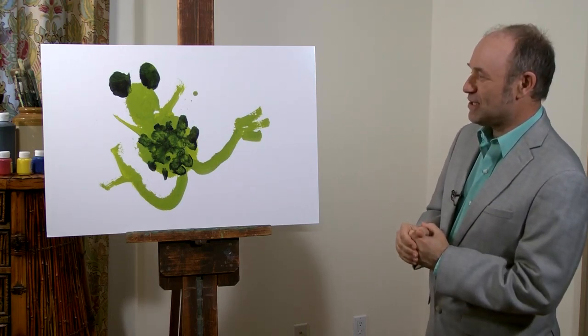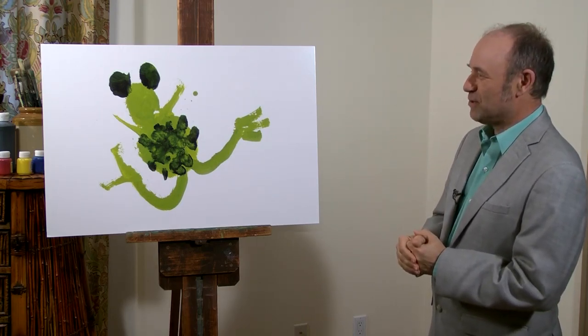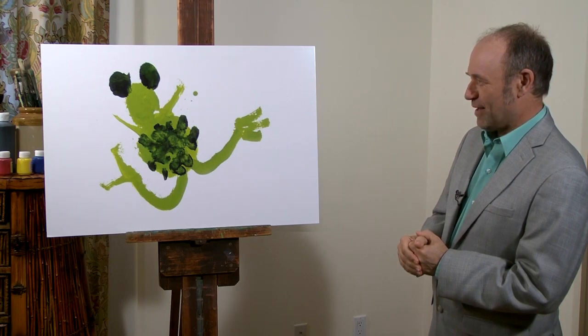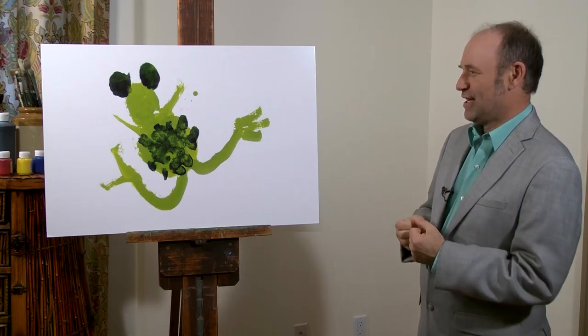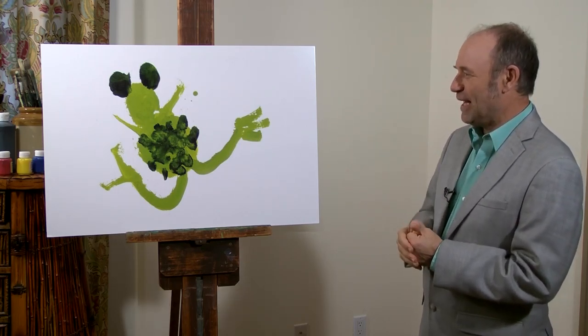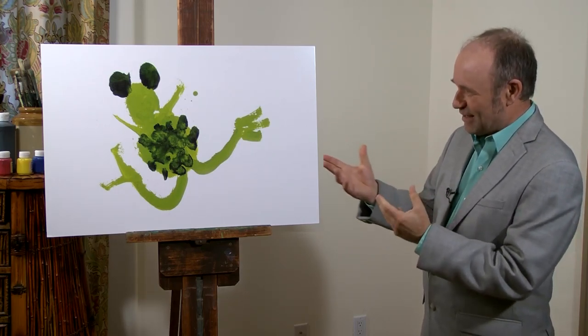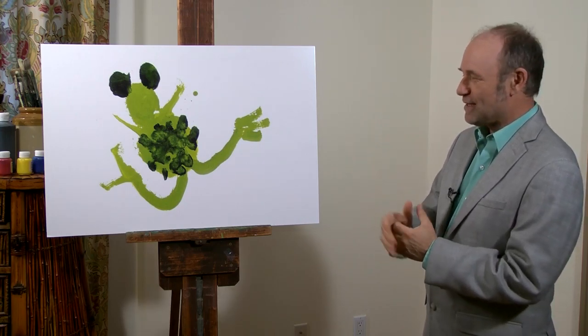This particular painting of a frog was painted by a kindergartner. And he'd just been taught how to mix the color green. And then he'd watched a little frog jumping up and down. And then he set to work. And this is the painting he came up with.